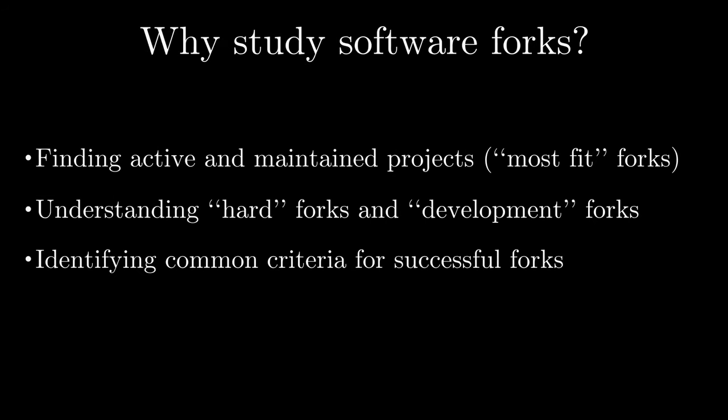First, let's review the reasons why researchers are interested in software forks. As most open source development nowadays happens on distributed version controlled systems, it is not always easy to find main repositories where the actual work happens and which are actively maintained. While most forks are only created temporarily as a way to contribute to a project, some development communities can also split and create hard forks of projects. These two types of forks have very different characteristics, but are both interesting to researchers.